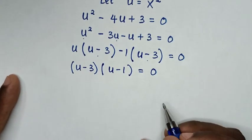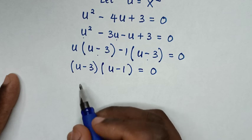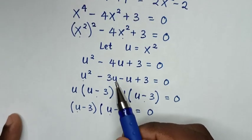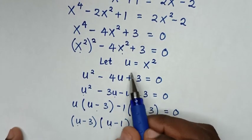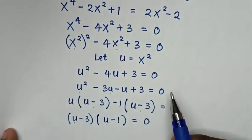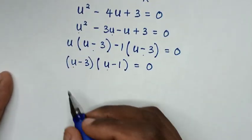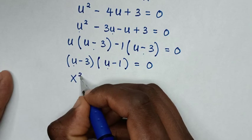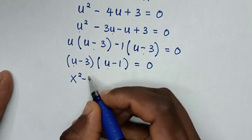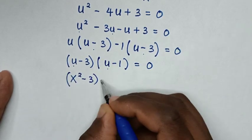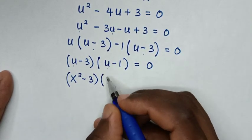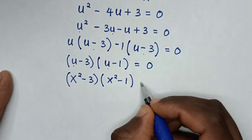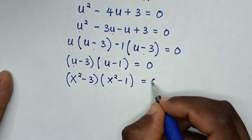Since u = x², we substitute back: (x² - 3)(x² - 1) = 0.